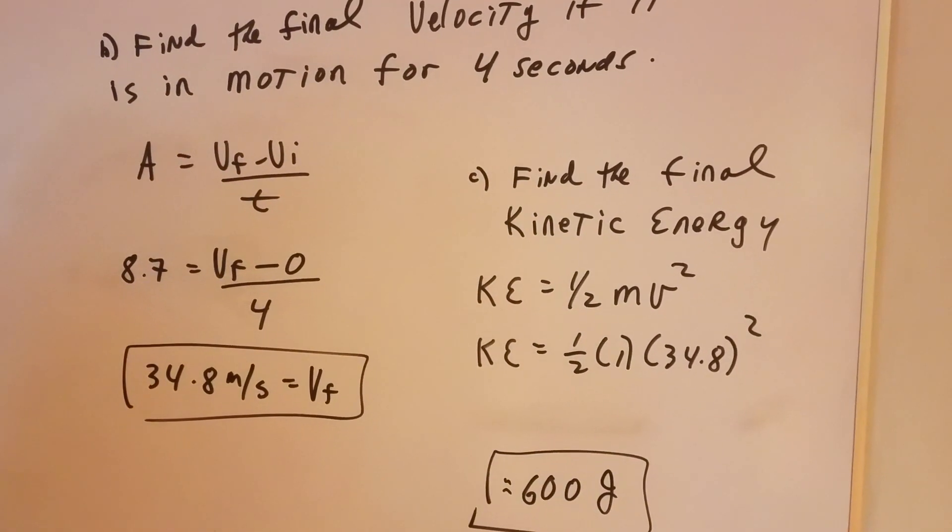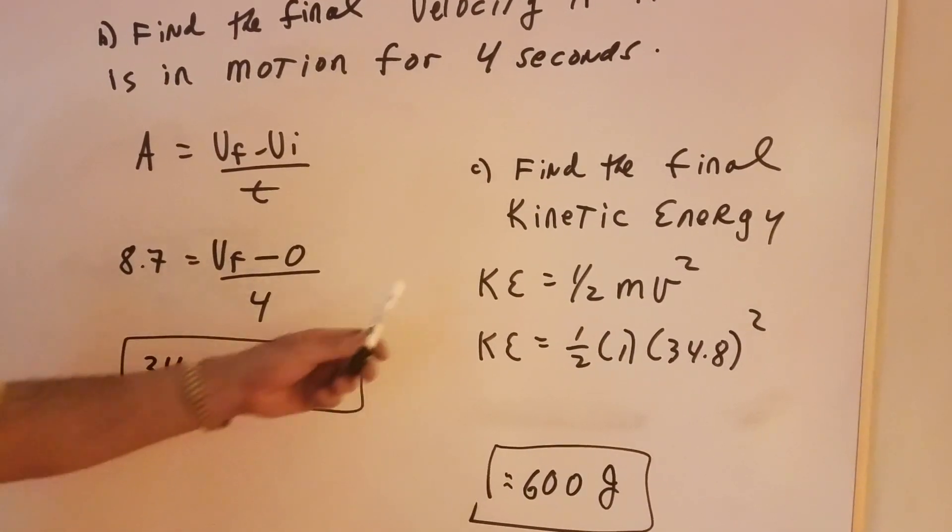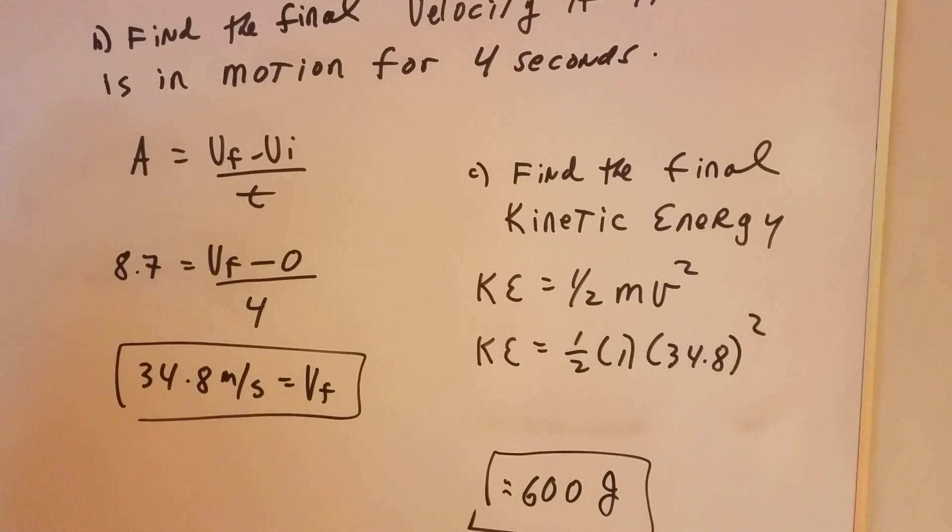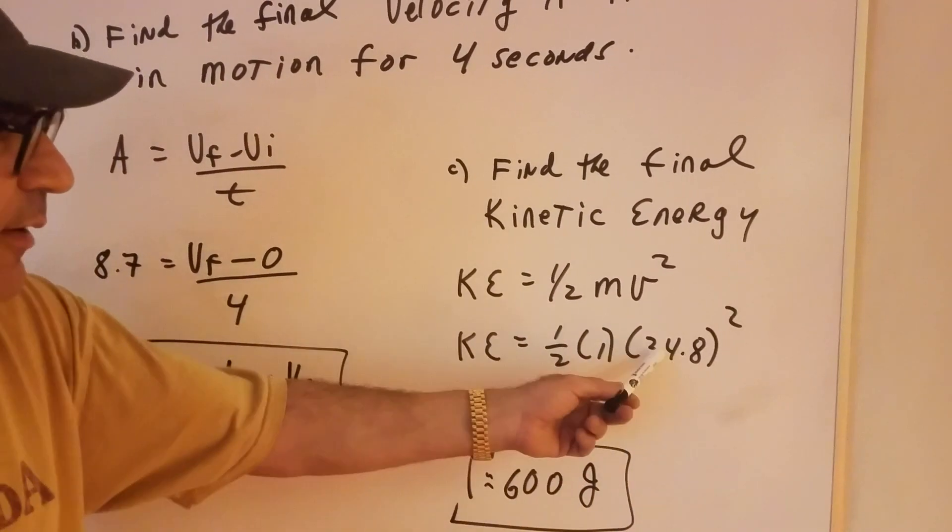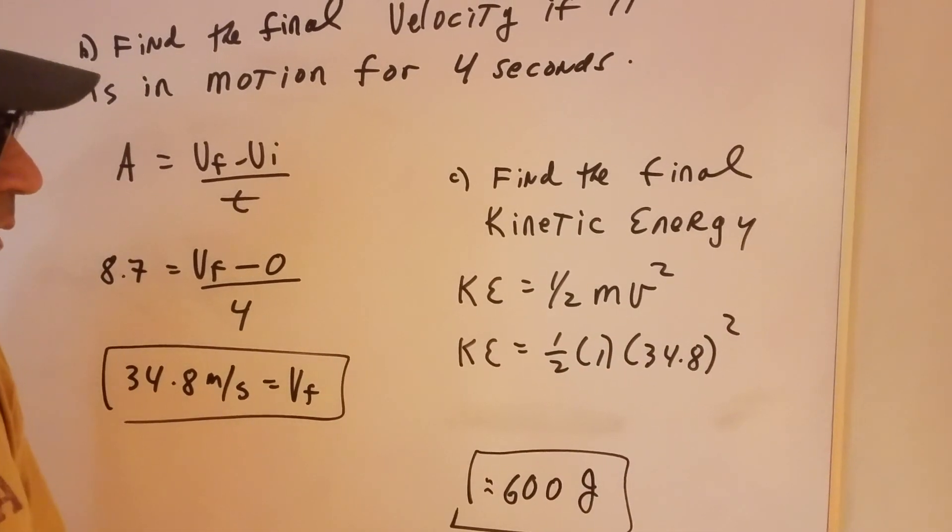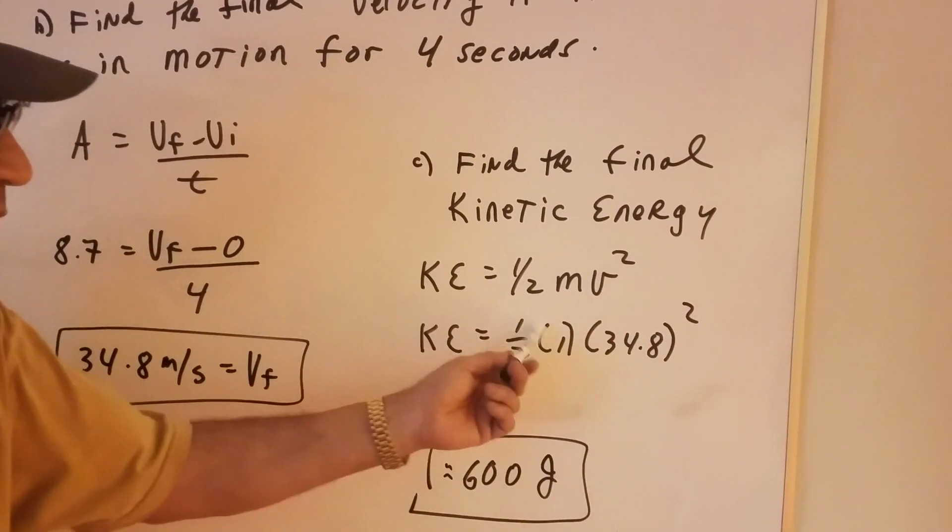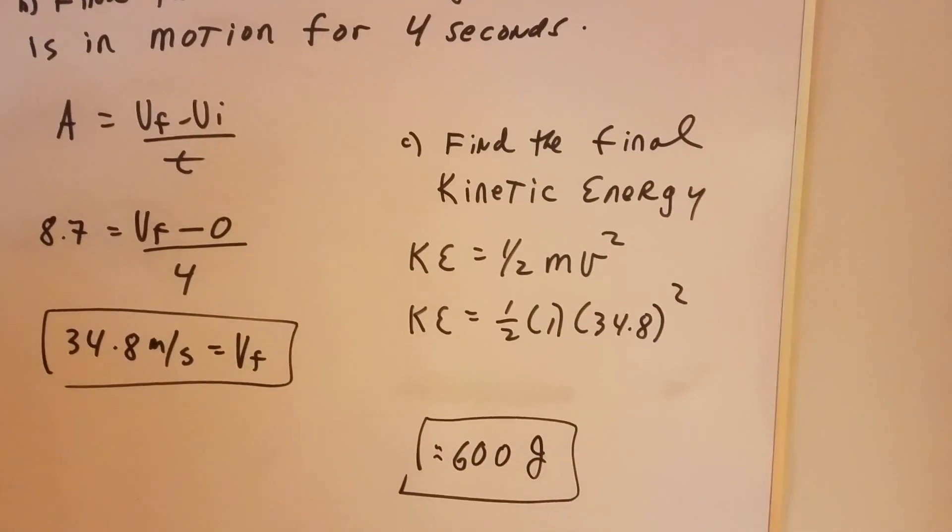And last but not least, the final kinetic energy. Well, kinetic energy is one half mv squared. So that's straight forward. One half of the mass. There's the velocity squared. And we cranked it out. It's about 35 squared times a half. It's about 600 joules.